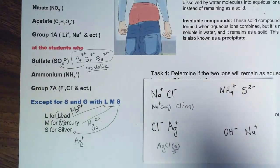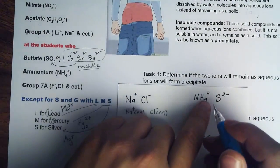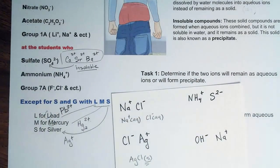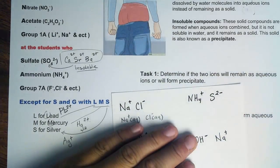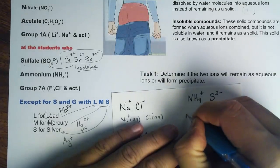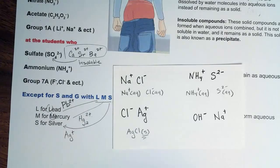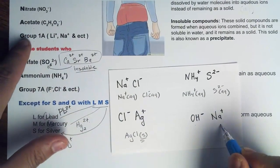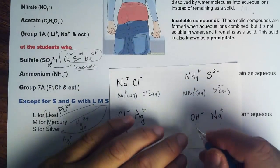Then we have ammonium sulfide. Ammonium has no exception, so anything bonded with ammonium is always soluble — these will remain as aqueous ions. At the bottom we have hydroxide and sodium — anything with Group 1A will be soluble, so of course these will be aqueous ions.